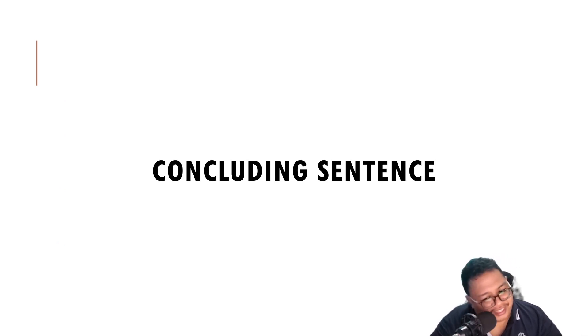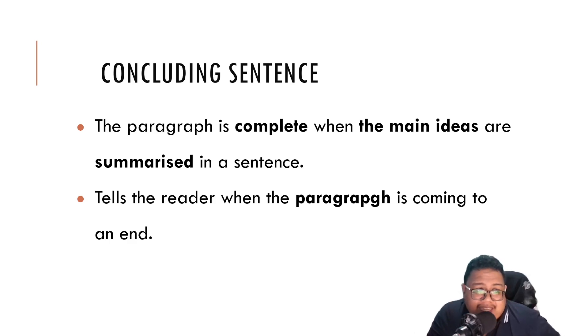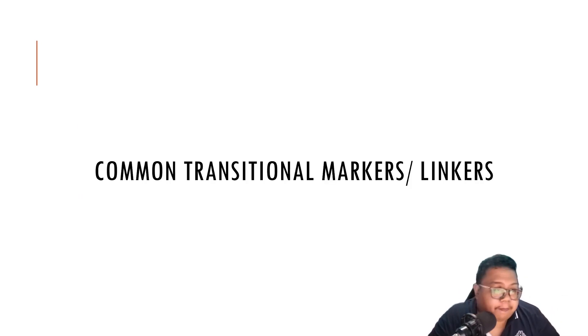After concluding sentence. What are concluding sentences? So the paragraph is complete when the main ideas are summarized in a sentence. So the last sentence in a body paragraph is the concluding sentence. It means that you are summarizing what you have said in the particular paragraph. And then you are moving on into a new paragraph. It tells a little word about a paragraph. A paragraph is coming to an end. So every essay should have a good concluding sentence. It's not compulsory but it makes it better.